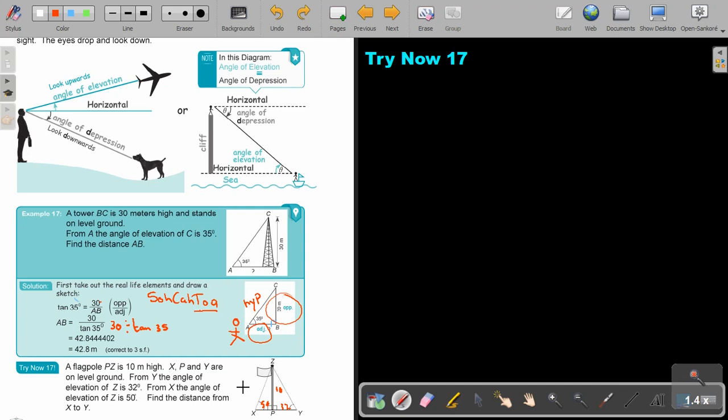Now, it's actually like I'm going to redraw that triangle for you. It's just a sketch. So now I'm starting to fill in. This was the 50. This was the 32. This was Z. This was X. This was P. And this was Y. And this distance was 10.